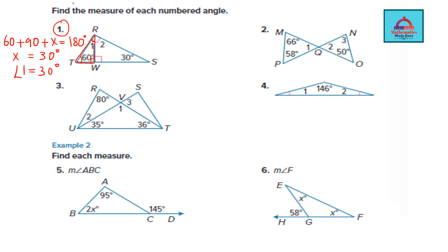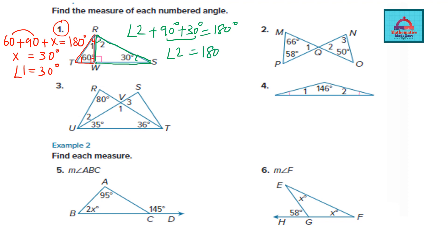To find angle 1: add 90 and 60 to get 150, then subtract from 180 to get 30. Now for the next triangle, we need angle 2. The three angles are: angle 2, 90 degrees, and 30 degrees. So angle 2 + 90 + 30 = 180. Simplifying: 180 minus 120 gives angle 2 = 60 degrees. That's how we find angle 1 and angle 2.